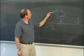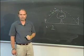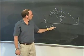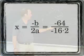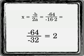Okay, in this case, this negative 16 is the a part of the equation, and the 64 is the b part. So what we're going to do is we're going to plug those values in and get negative 64 over negative 16 times 2. And that's going to come out to negative 64 over negative 32, which is 2.